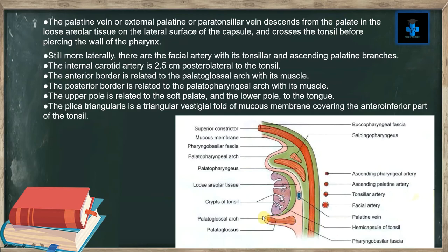The anterior border is related to the palatoglossal arch and its muscle. The posterior border is related to the palatopharyngeal arch with its muscle. The upper pole is related to the soft palate, and the lower pole is related to the tongue. The plica triangularis is a triangular vestigial fold of mucous membrane covering the antero-inferior part of the tonsil.